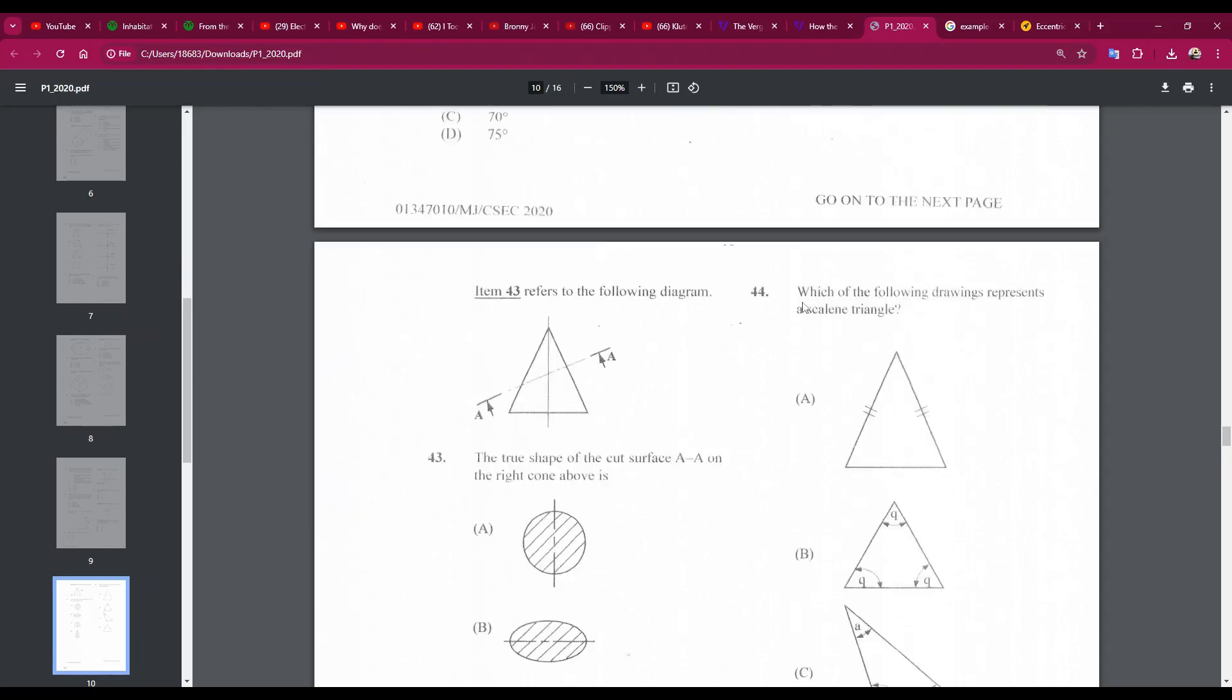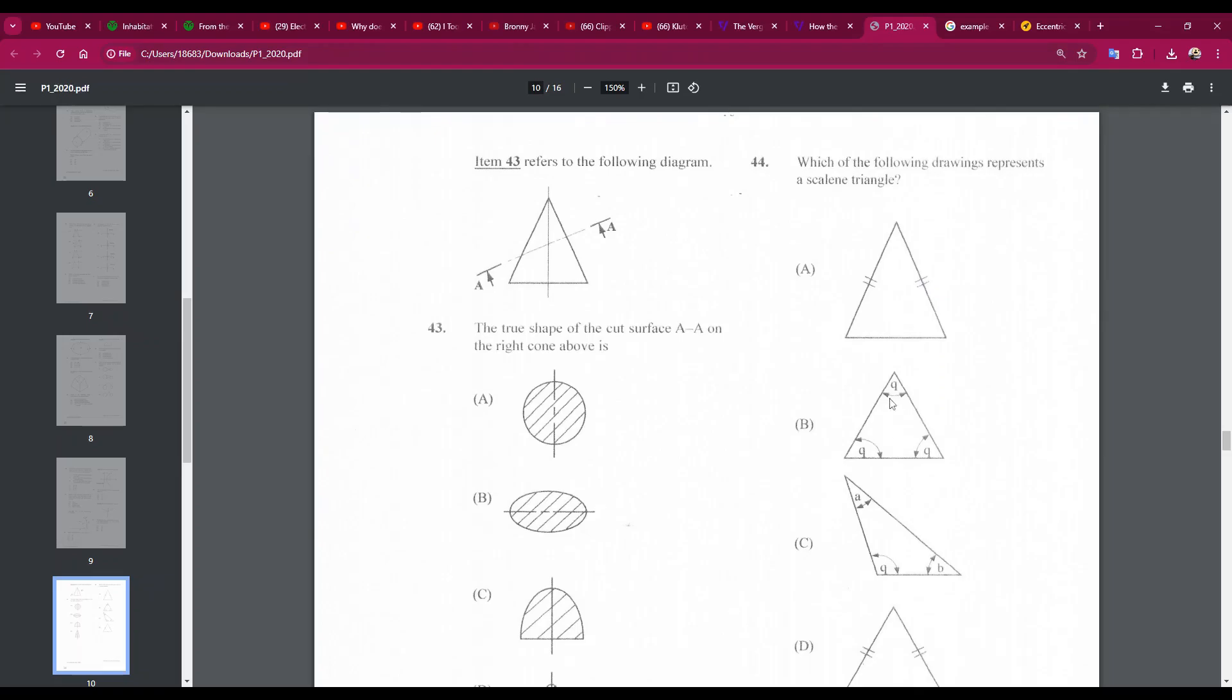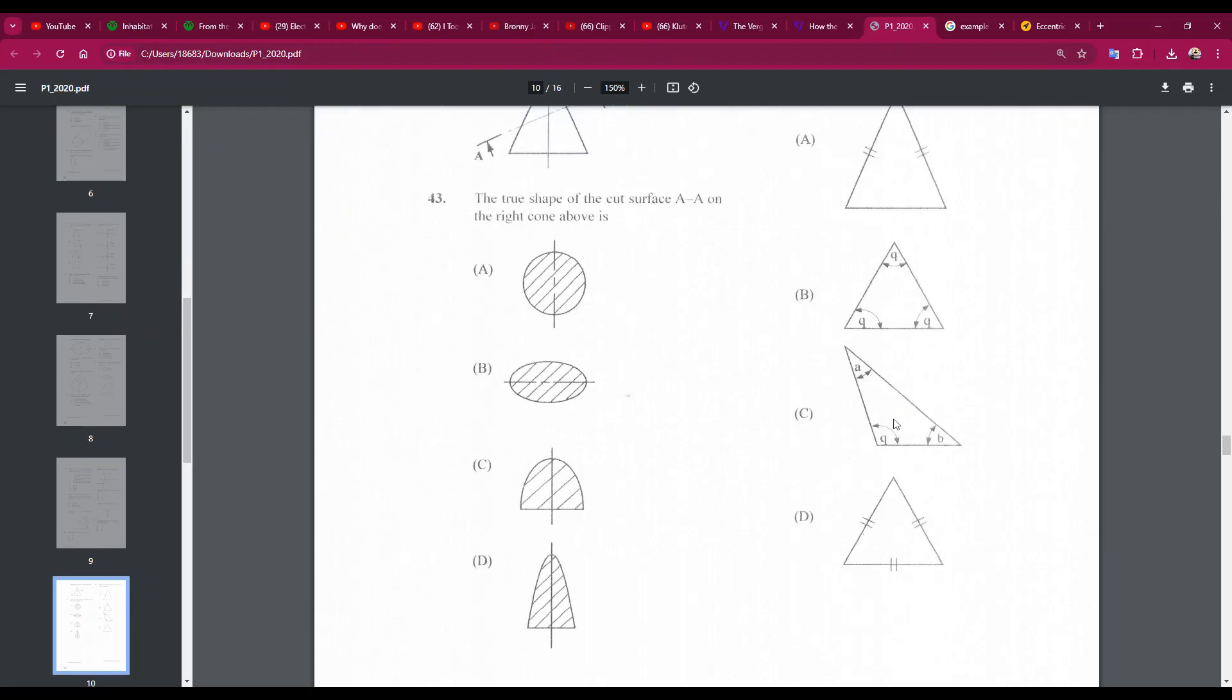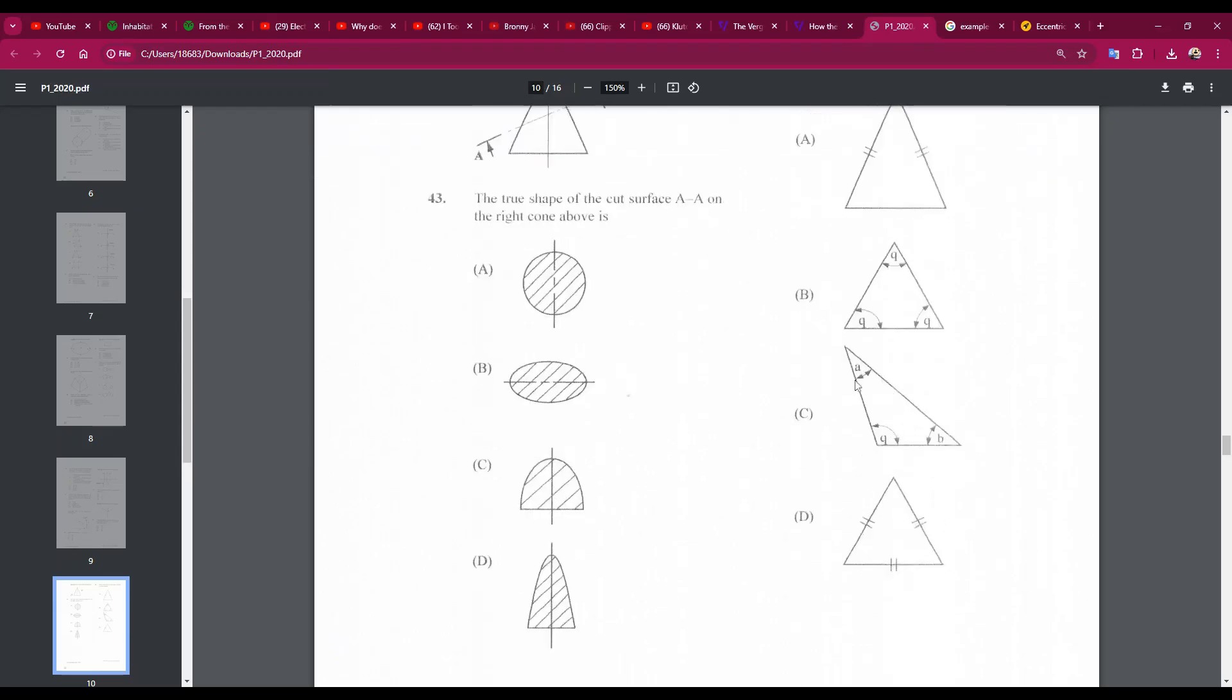Number 44: which of the following drawings represents a scalene triangle? So a scalene triangle has no equal sides or angles. This triangle has two equal sides. This triangle has three equal angles. C looks good. The answer is C. Number 44C. This is our scalene triangle.